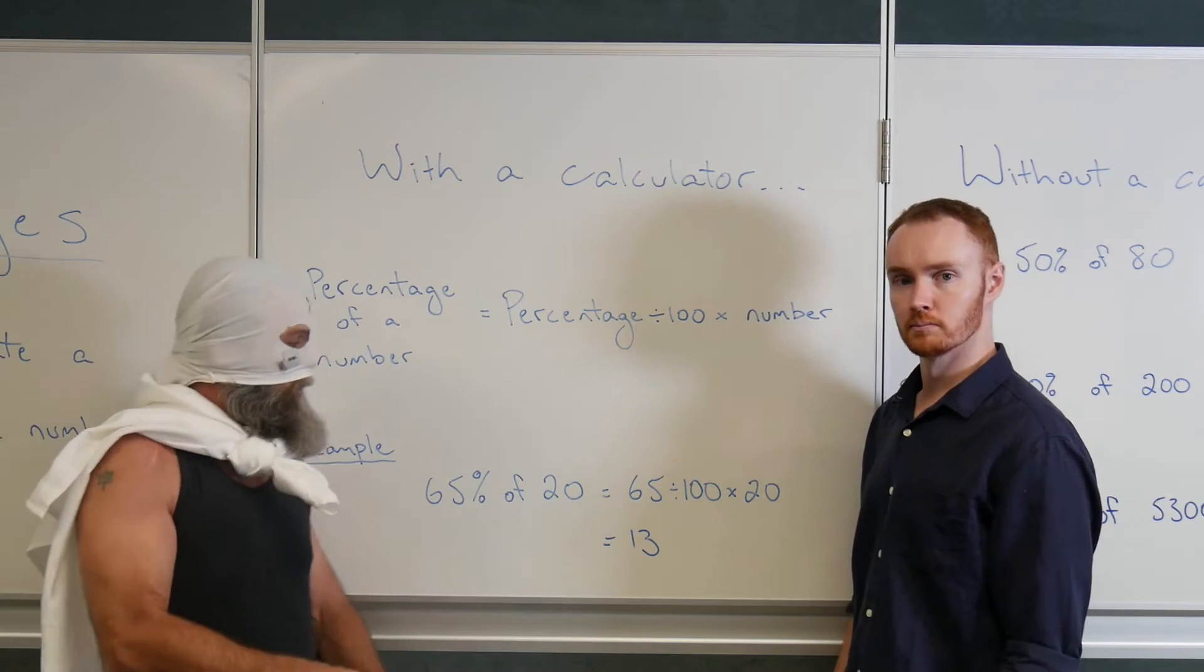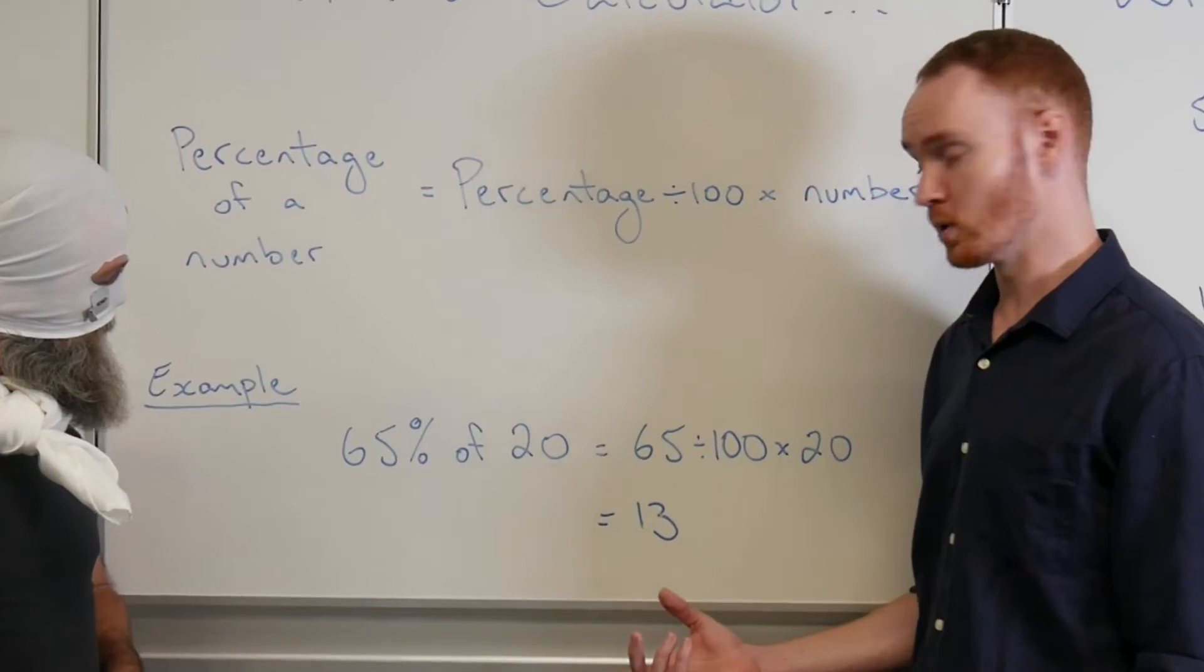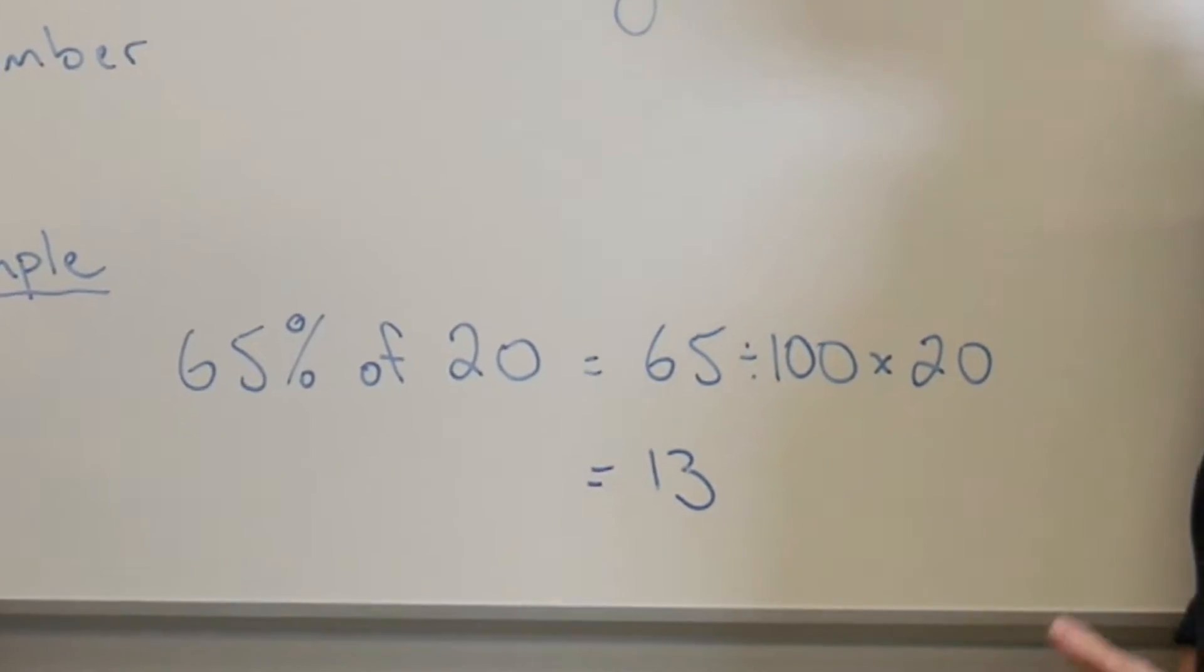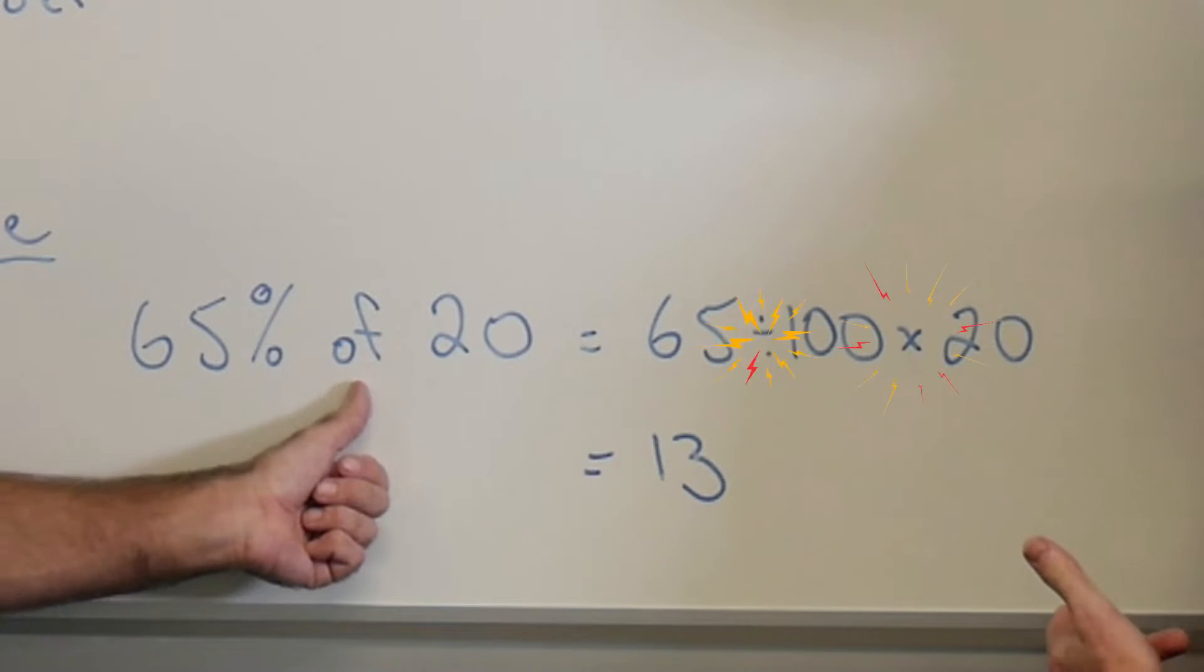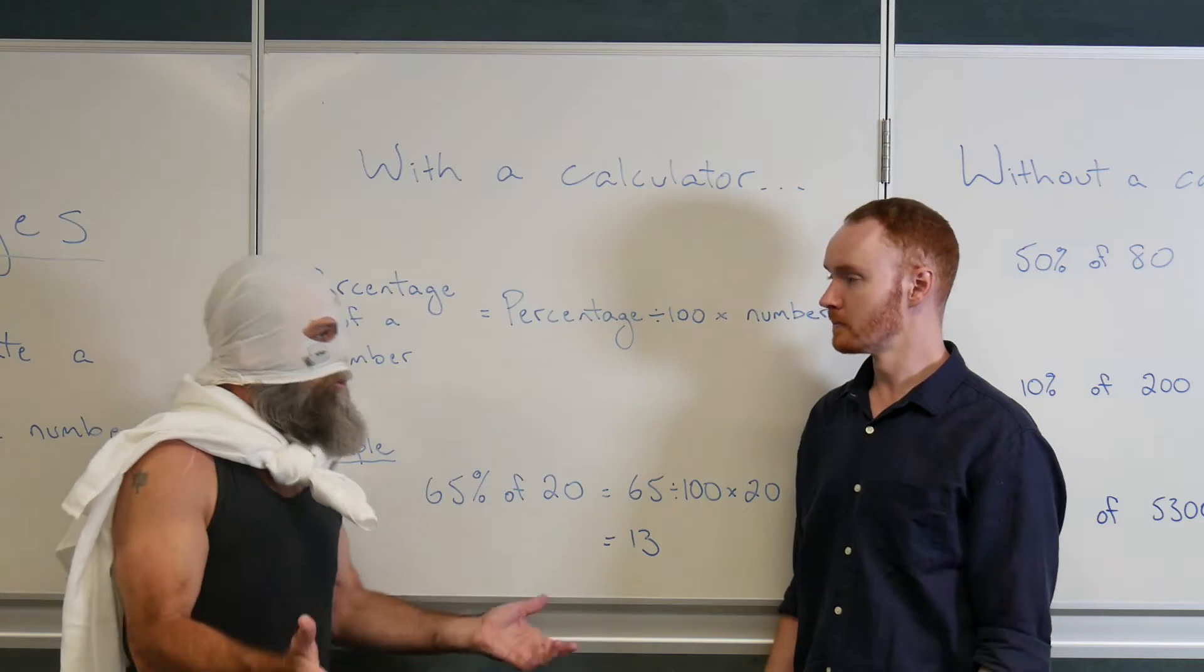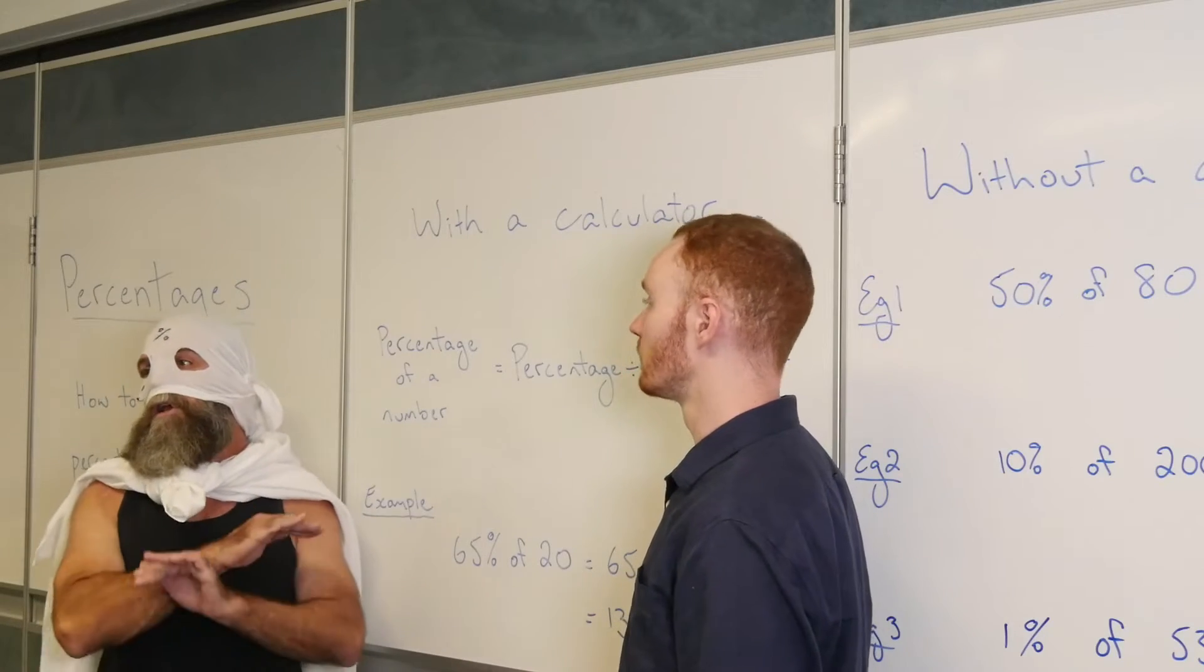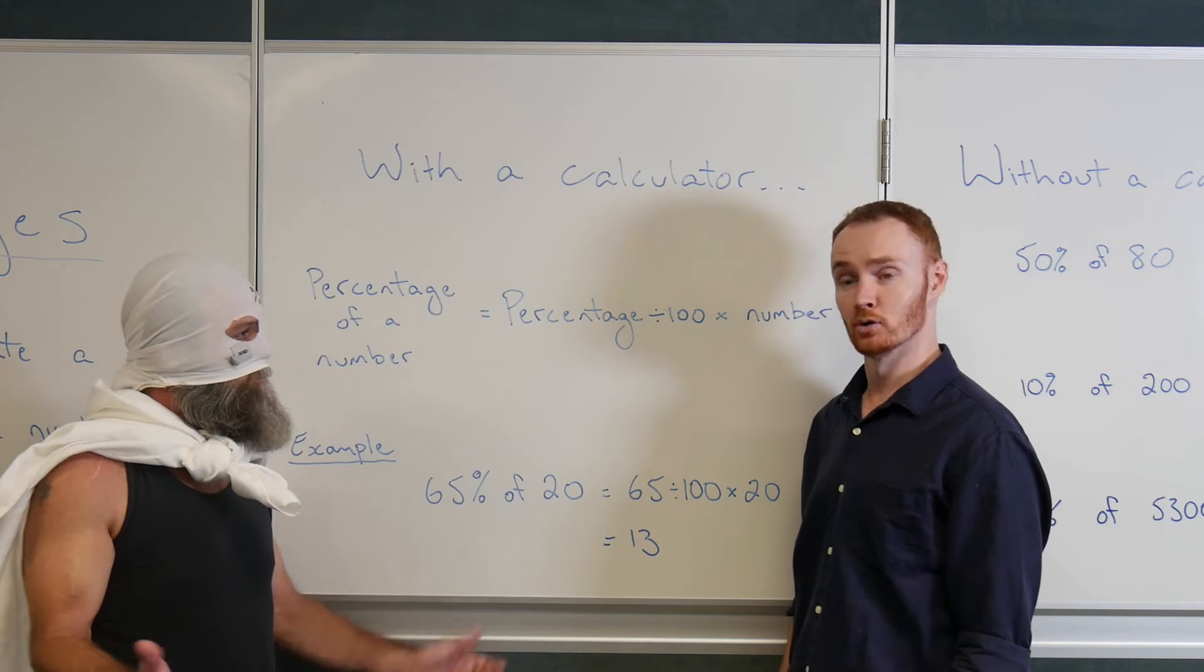Would you like to talk the kids at home through this example? I think I understand now. So 65% of 20, I take the 65, divide it by 100, multiply it by 20, using my calculator, we get the answer to 13. It couldn't be easier. Wow. And sir, this strategy works for every single percentage. That's handy. Every single time.